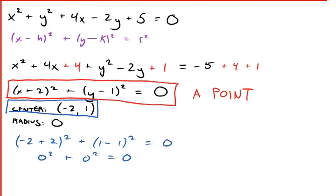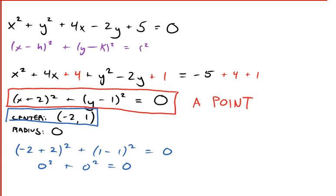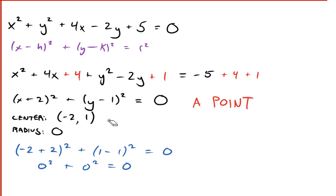Go up here. Previous example. There was only one point that satisfied the given equation. You can think about it as a circle with radius 0. It's all of the points that are 0 units away from the center. And that only leaves you with the center.